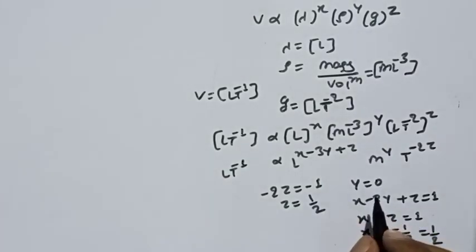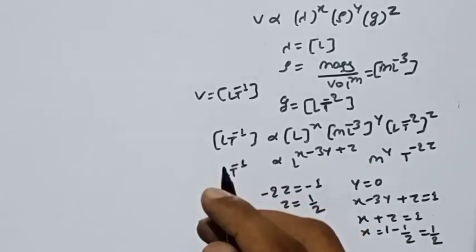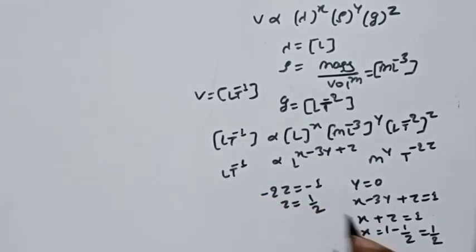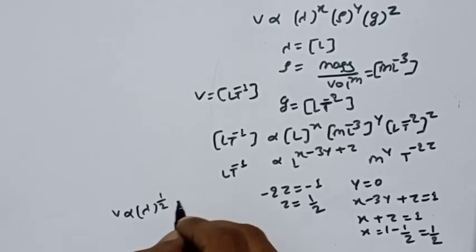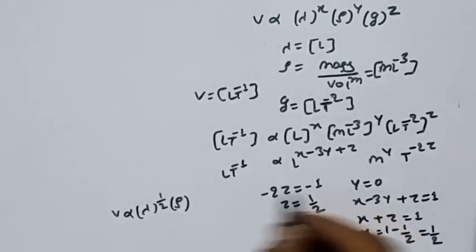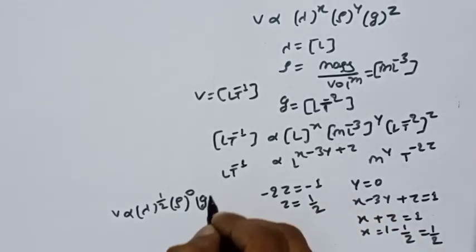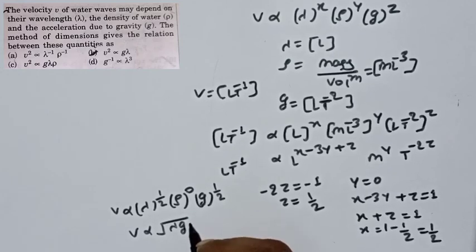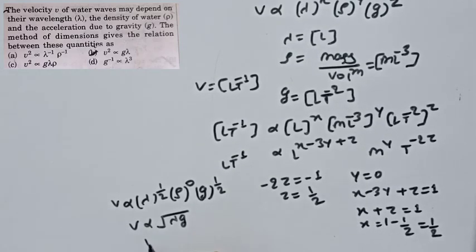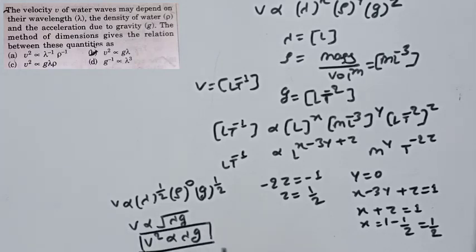Putting these values: velocity is proportional to lambda^(1/2) times g^(1/2), and density to the power zero. So v is proportional to under root of lambda times g. This is your final answer: v ∝ √(λg).